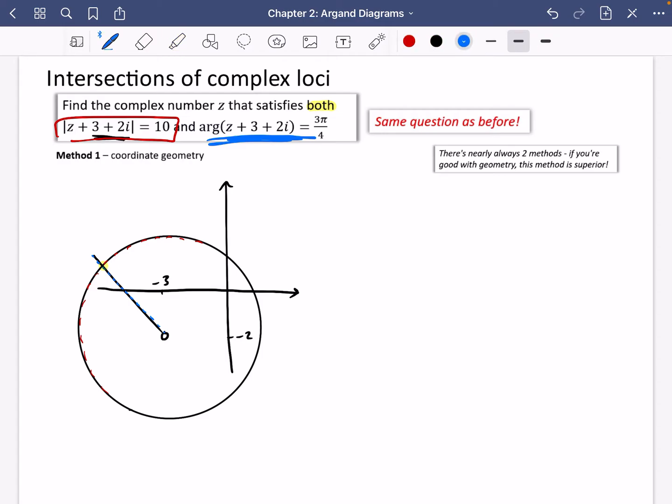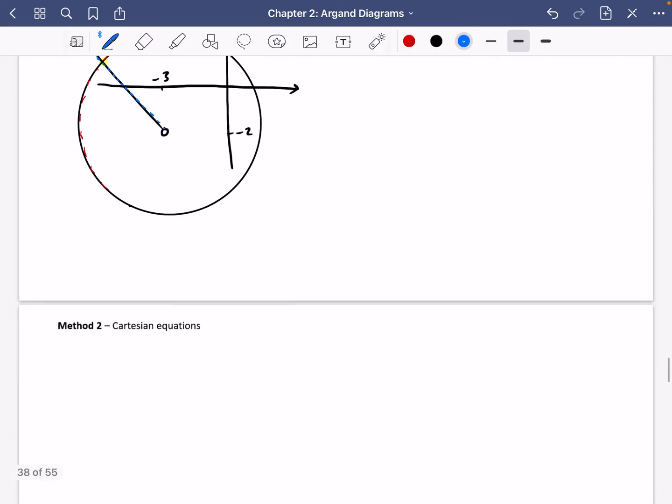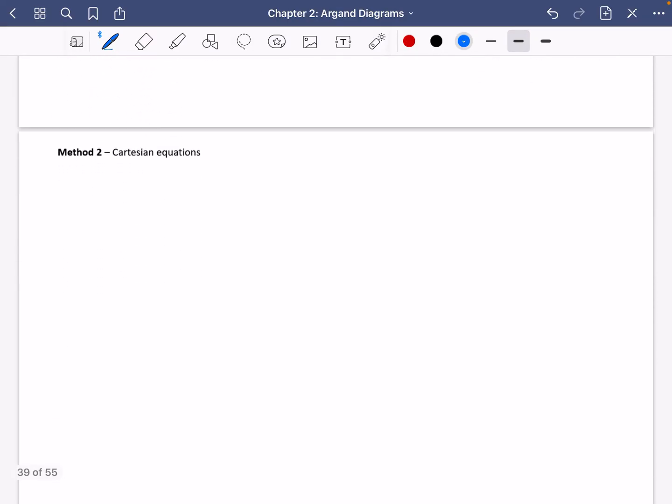So there's two different ways you can do this. Method one is coordinate geometry. Drawing the diagram and thinking about the patterns that you know to do with shapes. When I say coordinate geometry, I really mean stuff to do with shapes. The second method is by using Cartesian equations and solving them simultaneously.